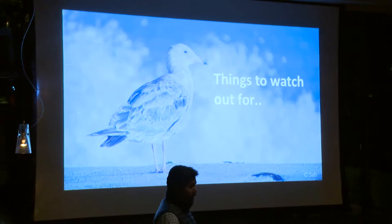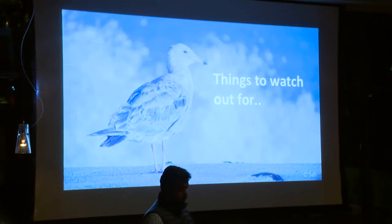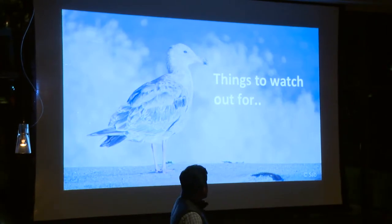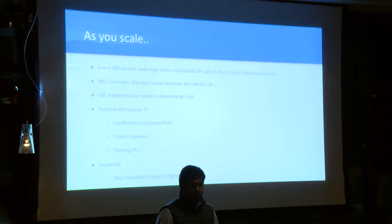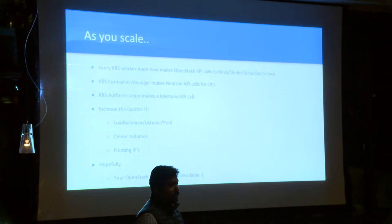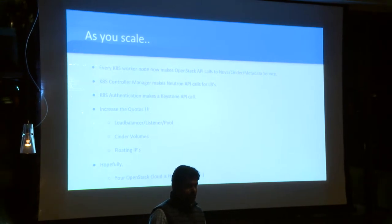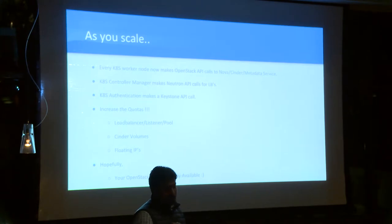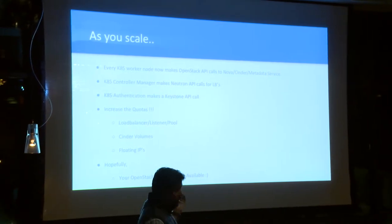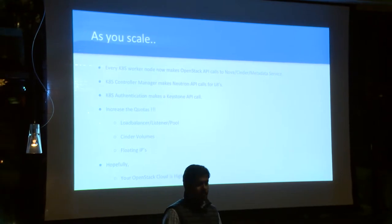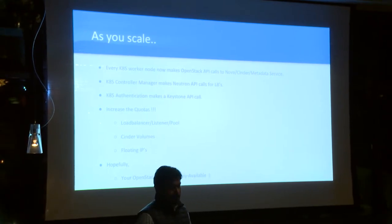There are some things to watch out for. Since each worker node is now making OpenStack API calls, you want to make sure your underlying OpenStack cloud is really scalable too. As you deploy more Kubernetes services, they'll make Neutron API calls; as you create more Cinder volumes, they'll make Cinder API calls. Also make sure the quotas for each project are increased wherever you deploy the Kubernetes cluster.